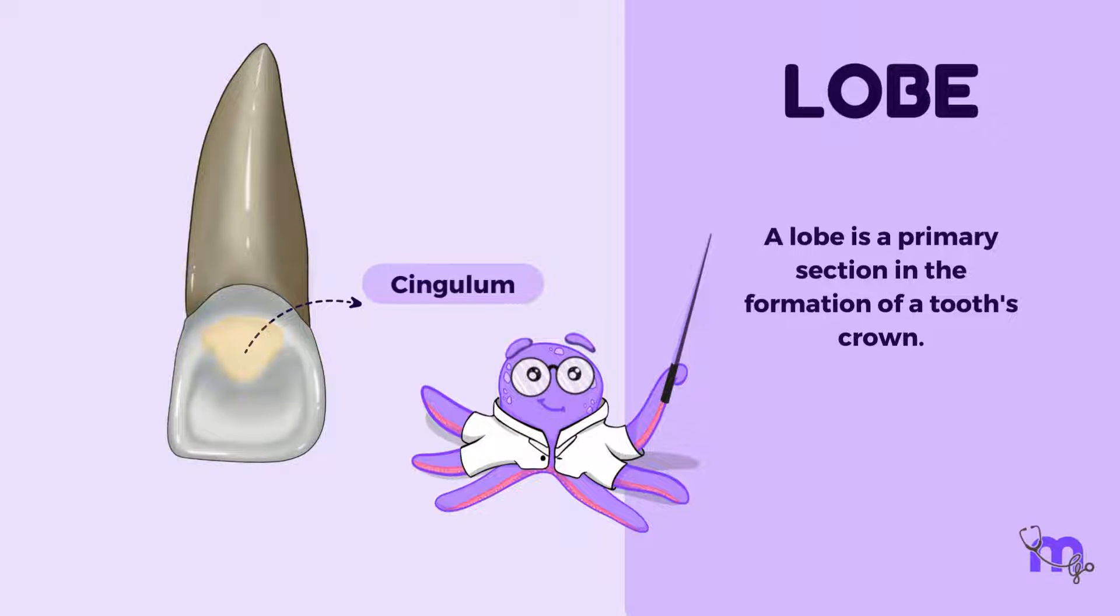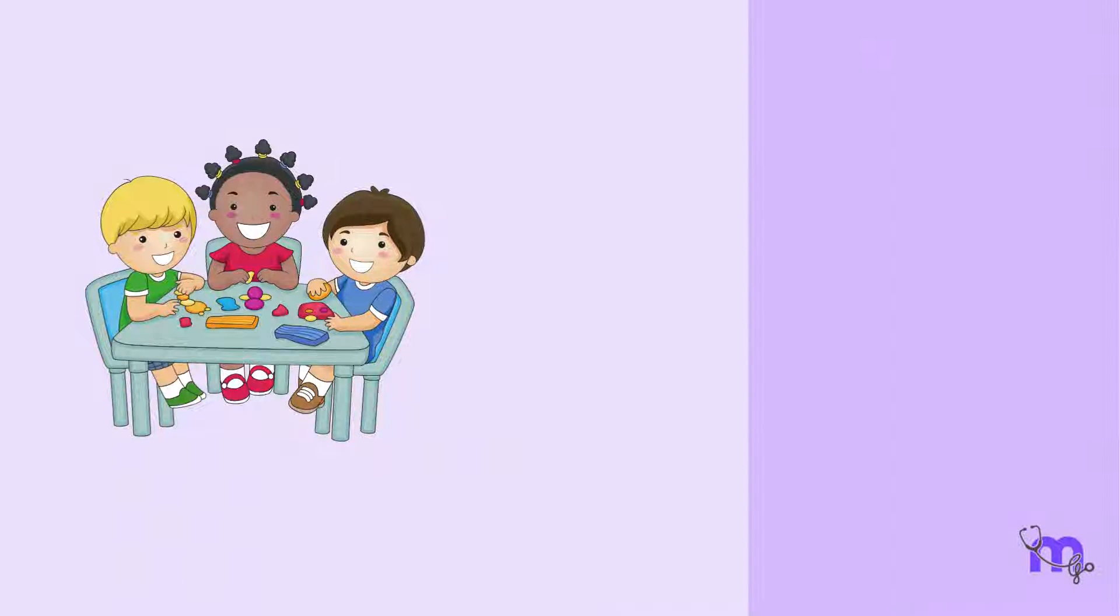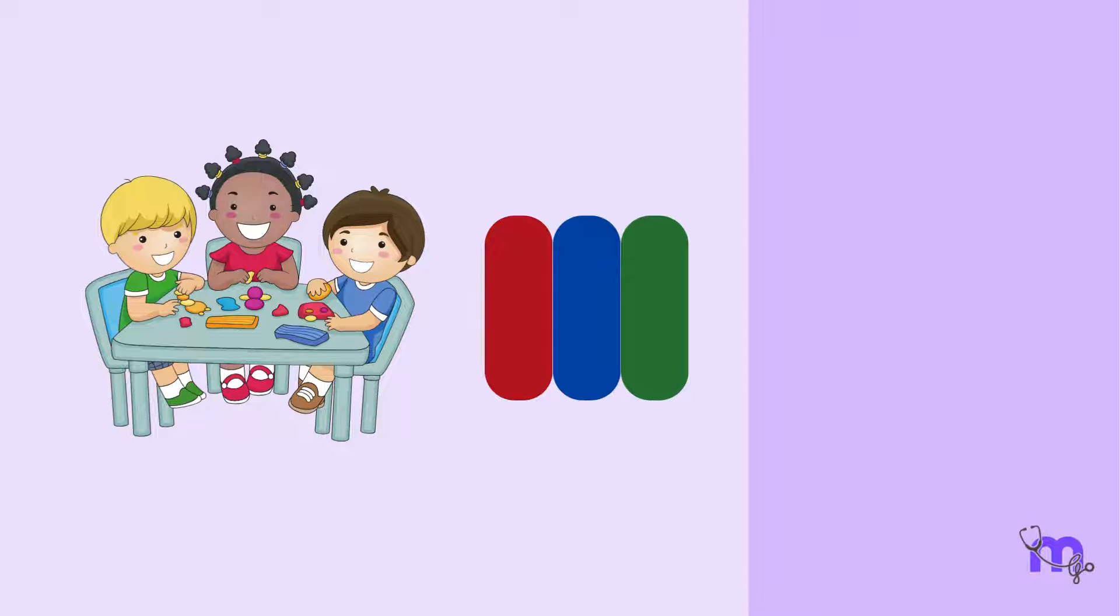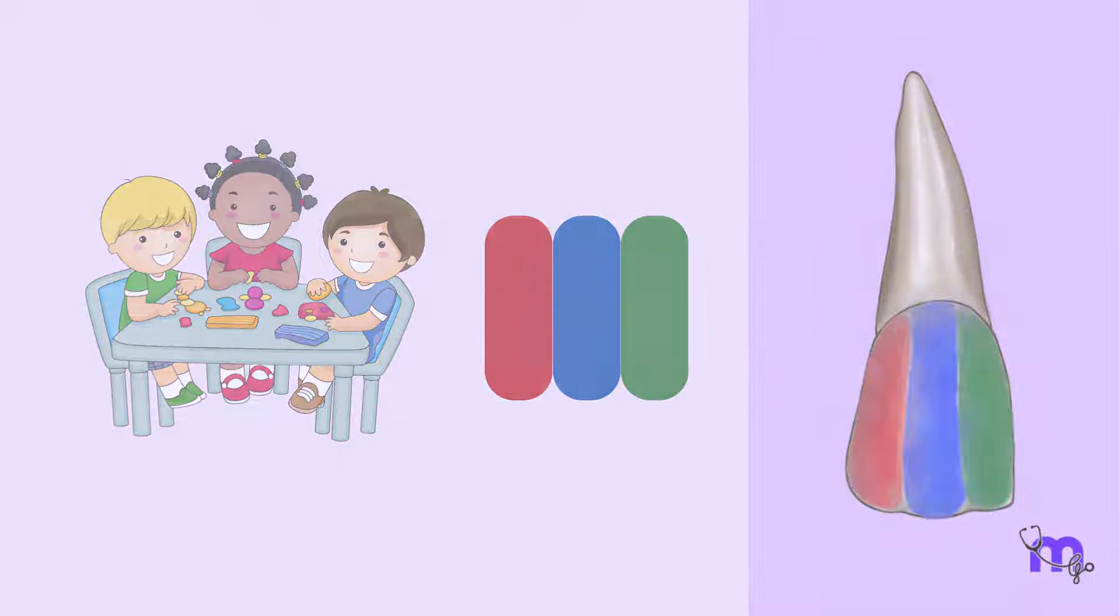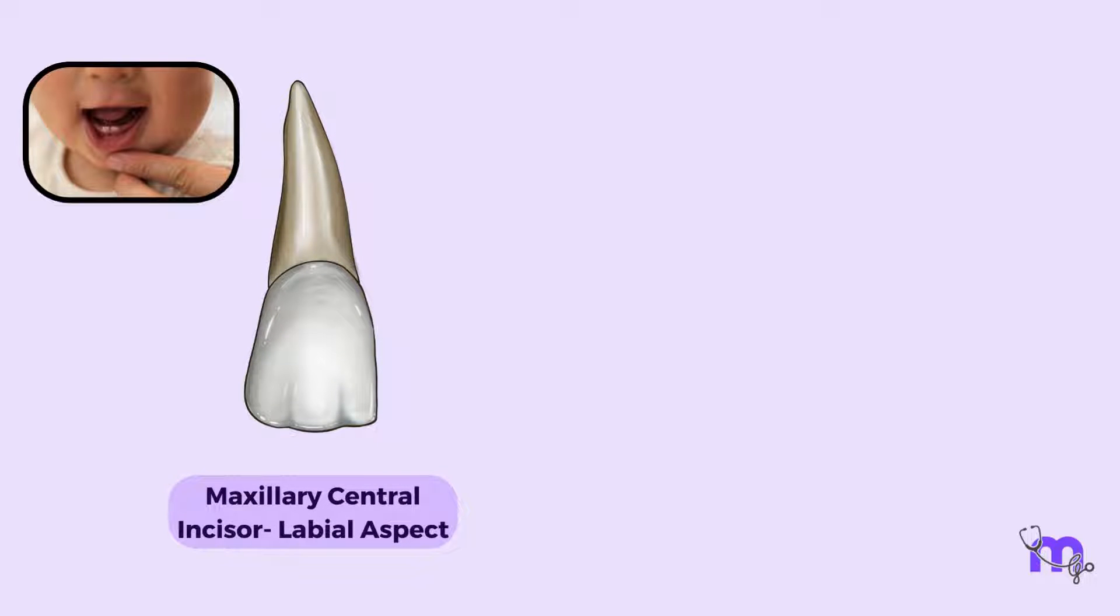Imagine children playing with clay. Let's say we have red, blue and green tubes of clay. Let's take three clay tubes and press them together, shaping them into an incisor. What do we get? We have the middle portion of the tooth formed by a blue clay lobe, and the left and right sides formed by the red and green clay lobes. Human tooth formation is also in a similar manner. The labial surface of an incisor is formed by three developmental pieces called the lobes. One more lobe is needed to form the lingual surface of the tooth.